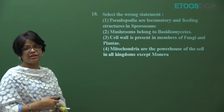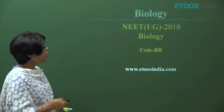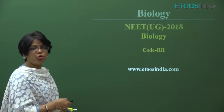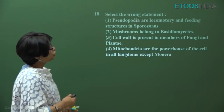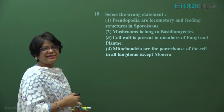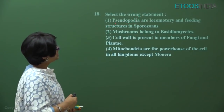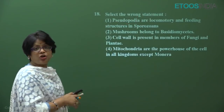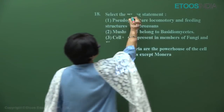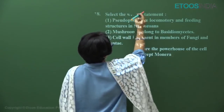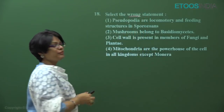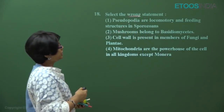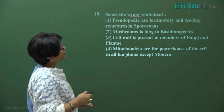It is question number 18 — we are solving the RR code. Now, select the wrong statements. As I always tell you, mark whether it is asked right or whether it is asked wrong. Now, pseudopodia are locomotory and feeding structures.